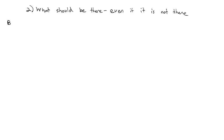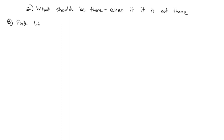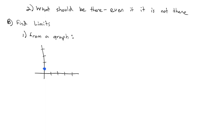Keeping that definition in mind, let's see if we can find some limits from a graph. I'm going to put a closed dot at (0,1), an open dot at (1,2), and a closed dot at (1,4). Then at (3,4) a closed dot, and connect the graph to three of those four dots. Then an open dot at (3,2), a closed dot at (4,1), and connect those dots.